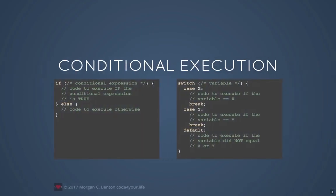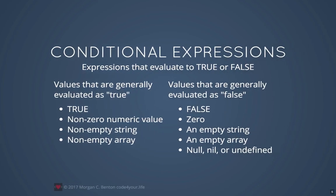In the case of conditional execution, we have structures such as if-then statements or switch-case statements, and they basically boil down to whether or not an expression is true or false. Conditional expressions evaluate to true or false. Values generally evaluated as true are: the boolean literal true, non-zero numeric values, non-empty strings, and non-empty arrays. Values evaluated as false are: the boolean literal false, zero, an empty string, an empty array, or the values null, nil, or undefined, which exist in various programming languages.